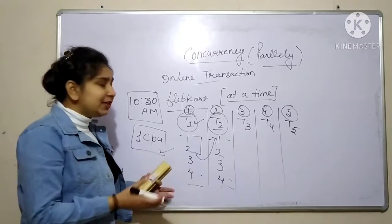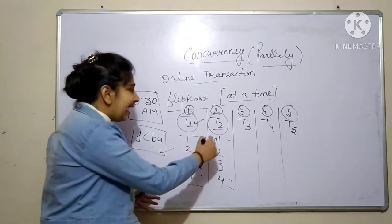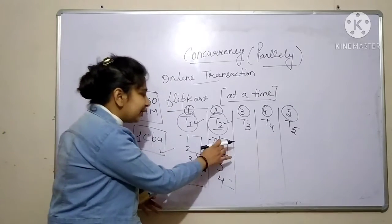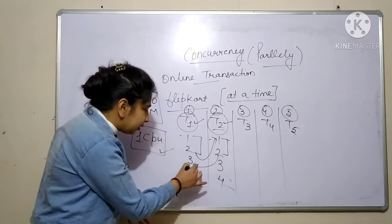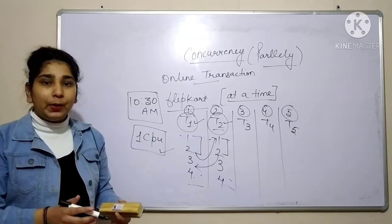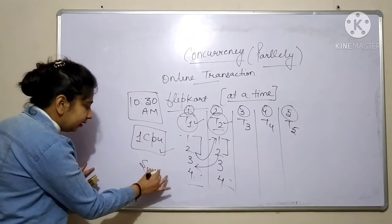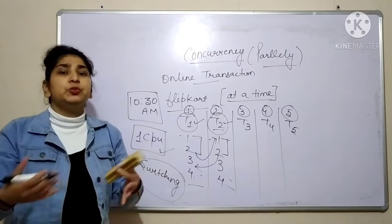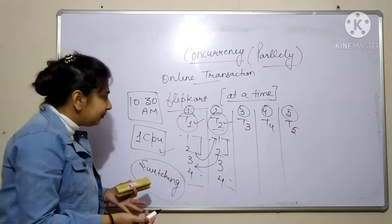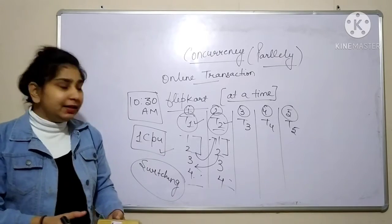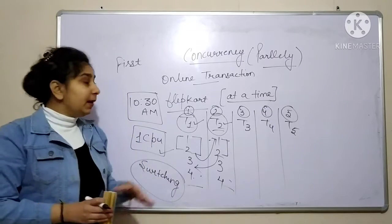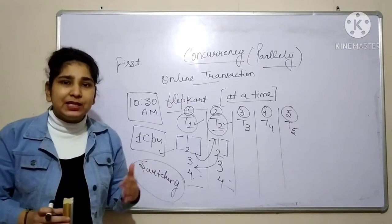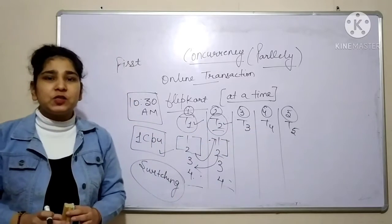We are doing a kind of switching between multiple transactions. I execute some instructions of T2, then switch back to T1. We keep switching between transactions so that we can reduce the waiting time of users. It is not that users don't have to wait at all in concurrent execution, but the response time is very less — users get a first response much faster in this case.